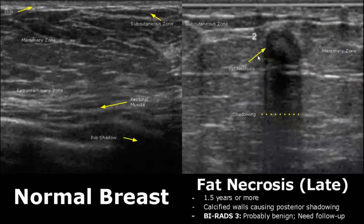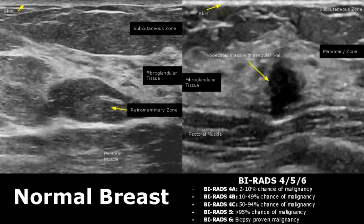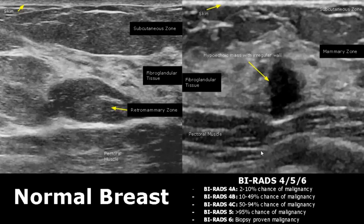Fat necrosis enters a late stage after 1.5 years. It will have calcified walls which give posterior acoustic shadowing. Now we move on to BIRADS categories which have chance of malignancy. BIRADS 4 has three subcategories: 4A has a 2 to 10 percent chance of malignancy, 4B is 10 to 49 percent, and 4C is 50 to 94 percent. BIRADS 5 has greater than 95 percent chance of malignancy, and BIRADS 6 is a biopsy-proven malignancy.